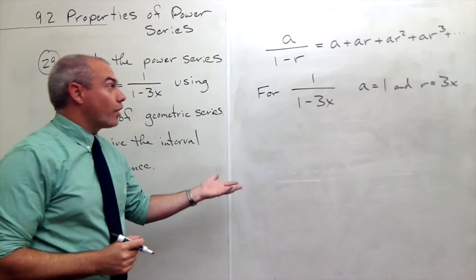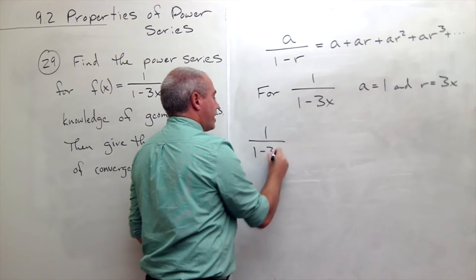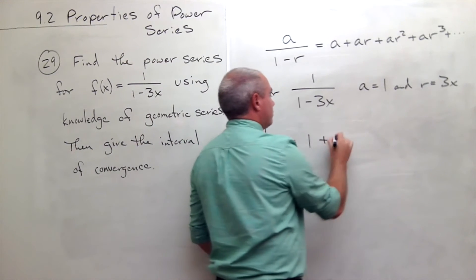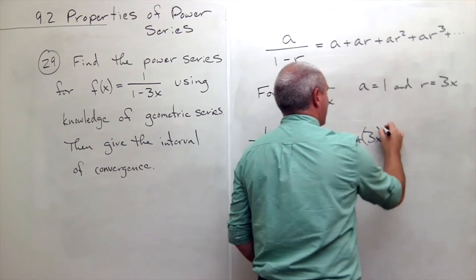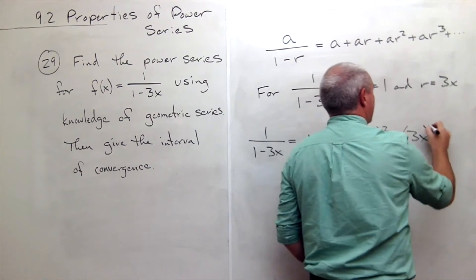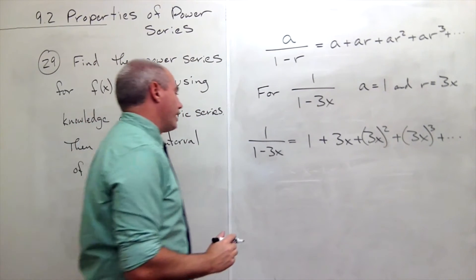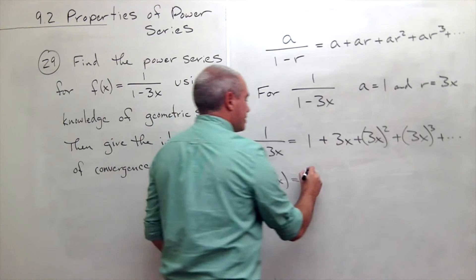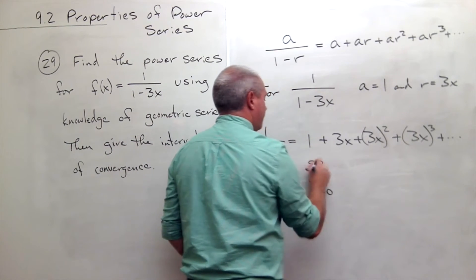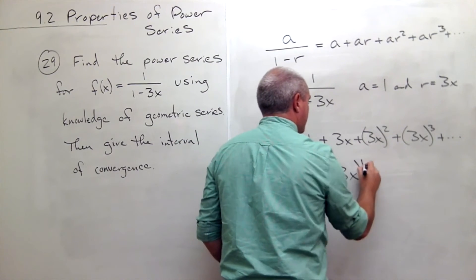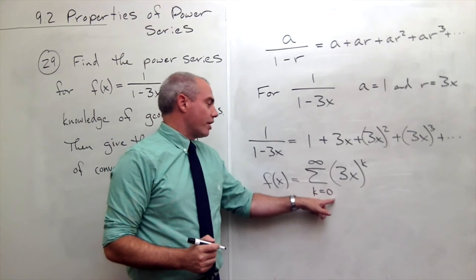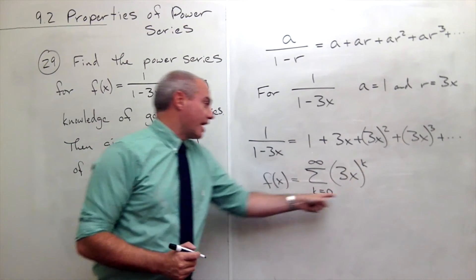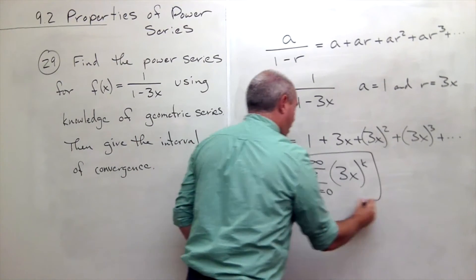We could write this 1/(1-3x) this way. We could say that it's 1 + 3x + (3x)² + (3x)³ plus and so on. Another way of doing that is we could say our function f(x) which is 1/(1-3x) is the sum k going from 0 to infinity of (3x)^k. And notice I started this k at 0 because (3x)⁰ gives me my 1 that I need to start with. So this is a nice power series form of f(x).